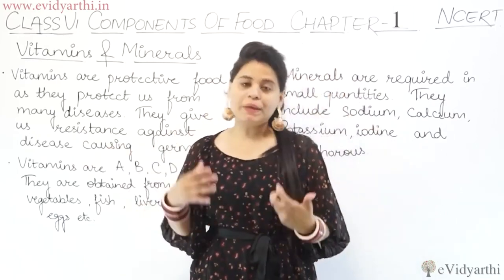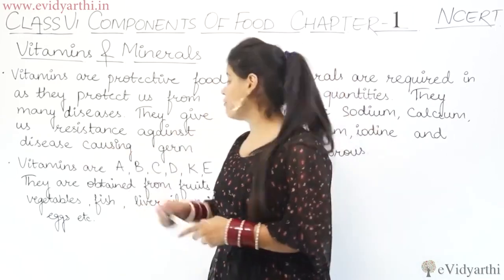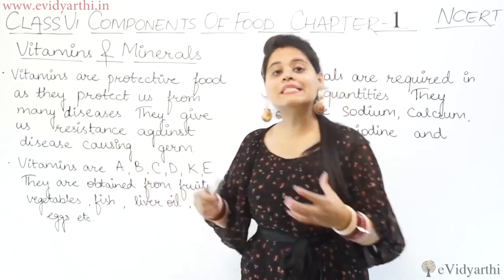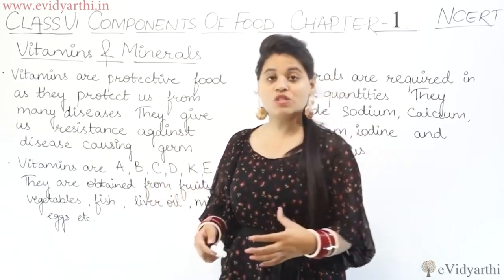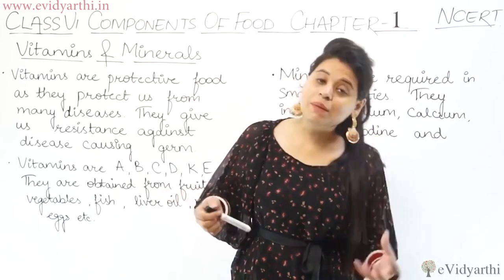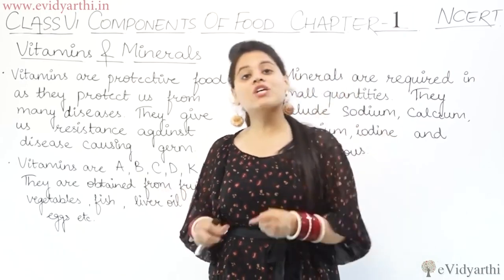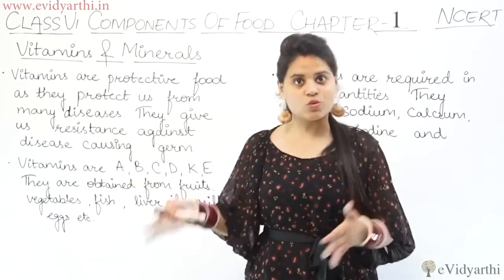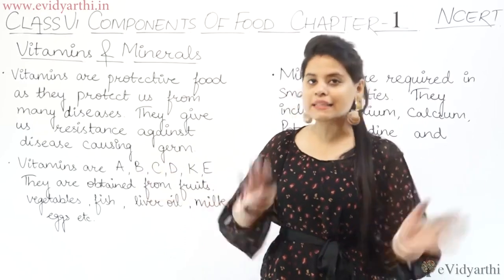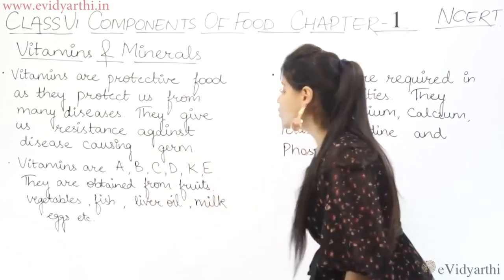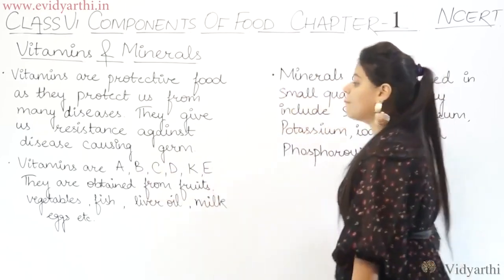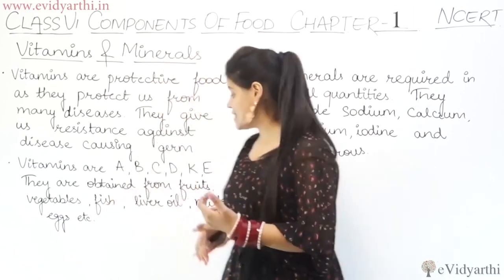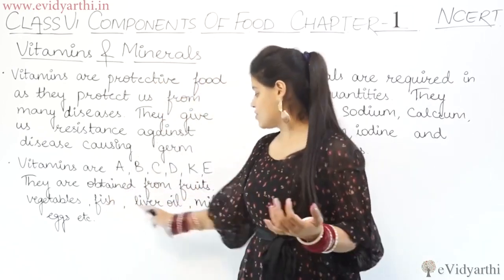Now we will learn more about vitamin A, which products come from it. And if vitamin B becomes less, then what diseases do we get? Overall, vitamins come from fruits, vegetables, fish, etc.